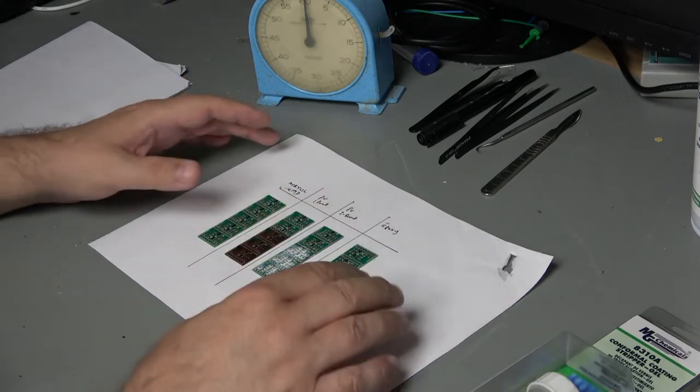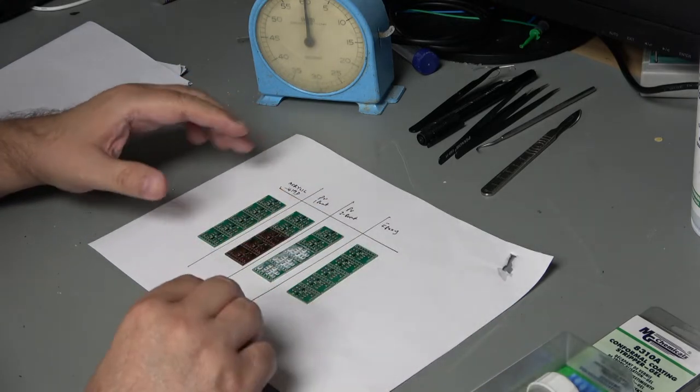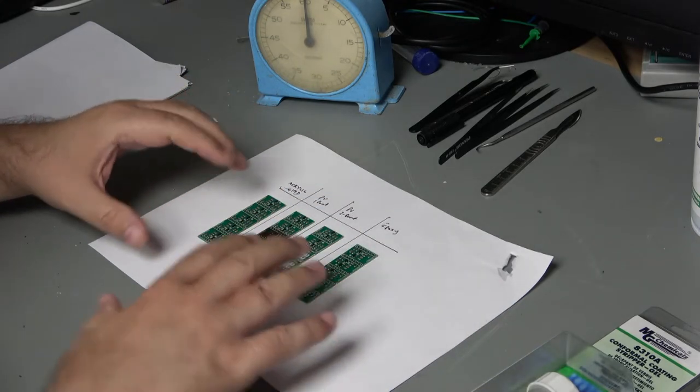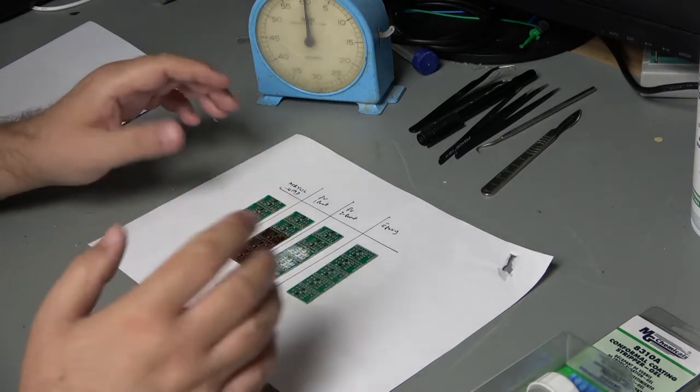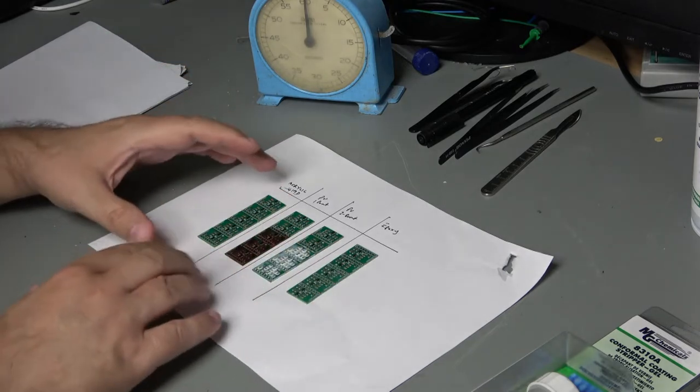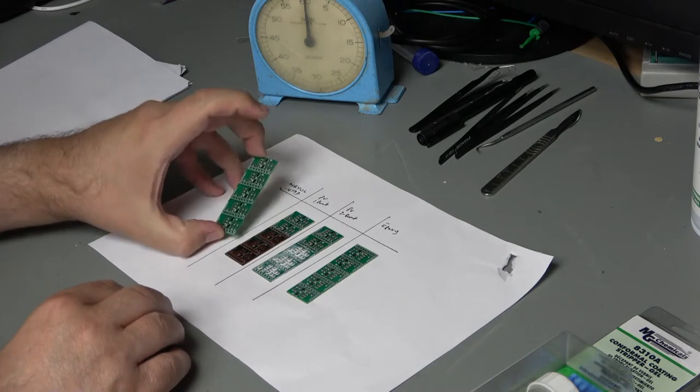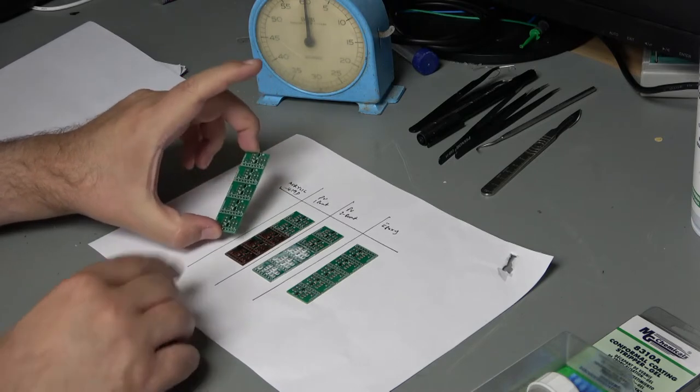Conformal coating is a bit of a challenge to repairers such as myself. It hinders probing, part removal, soldering, that sort of thing. It's only when you come to examine the board close up that you can even see it. For example, on this board the bottom three segments are conformally coated.